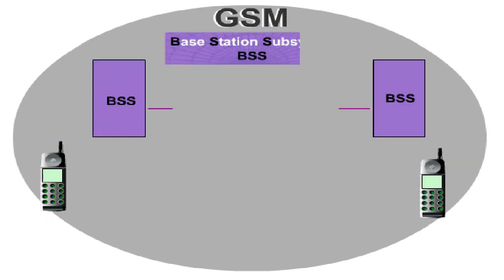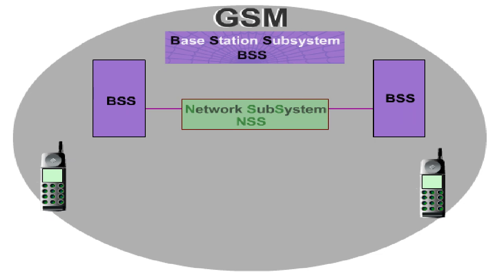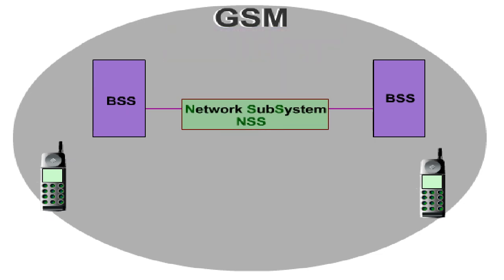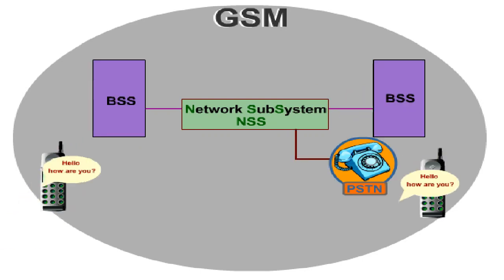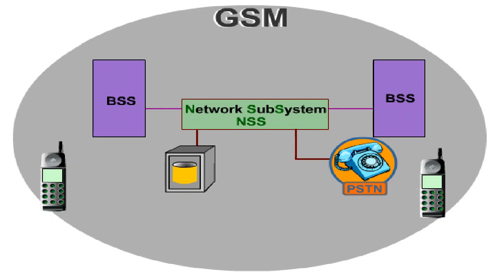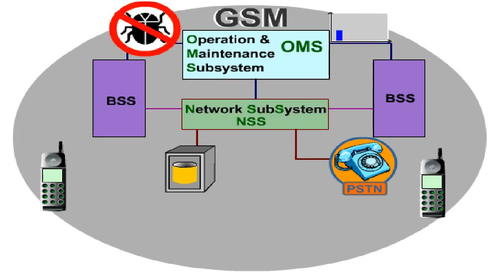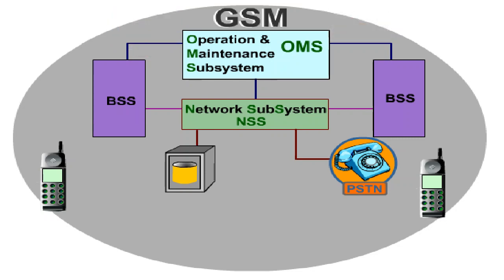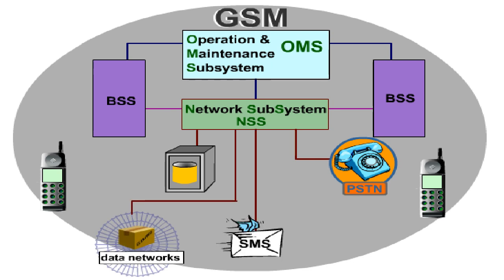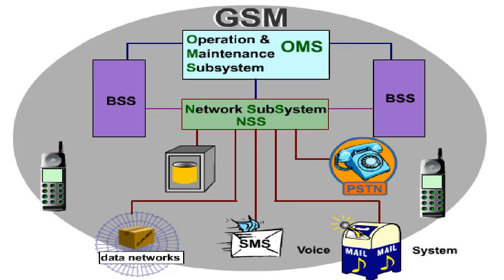The base station subsystem, BSS, provides the connection between the mobile stations and the network subsystem, NSS. The NSS forwards user signals to other mobiles via the BSS or subscribers in the public switch telephone network, PSTN, and provides necessary customer data. The operation and maintenance subsystem, OMS, monitors BSS and NSS performance and remotely debugs occurring faults in the network elements. Additional components such as interface elements to data networks, the short message service centre, or the voicemail system complete the GSM system architecture.